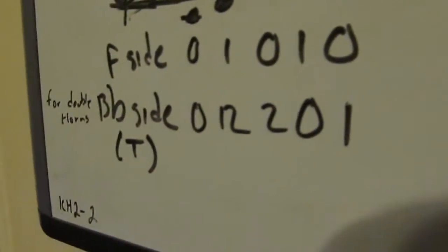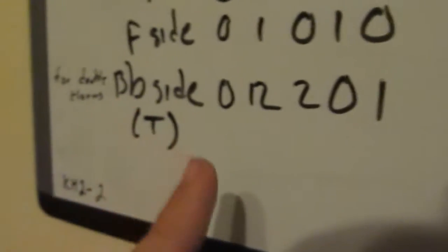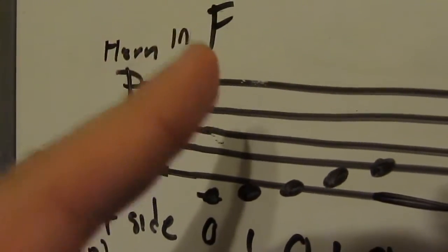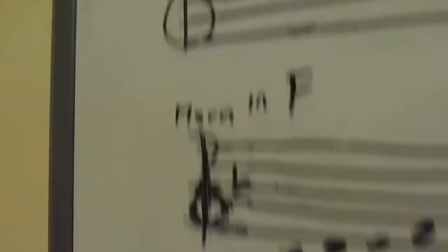Now, for the Bb side. Let me make this very clear. So, when you're using the Bb side, you're going to be reading an F regardless. Okay. Now, so when you're using the Bb side, it's the same exact pitch and fingerings of a trumpet, but an octave lower. The pitch is an octave lower.